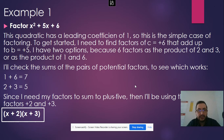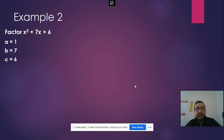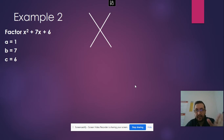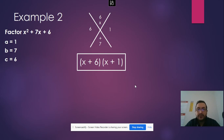Now let me do another example, which might be a little easier to follow. We have x squared plus 7x plus 6. Again, the leading coefficient is 1, b is 7, and c is 6. I need two numbers that multiply to give a times c, which is 6, and when we add them, give me b, which is 7. Those two numbers are 6 and 1 — multiply to get 6, add to get 7. So the factors are (x + 6)(x + 1).